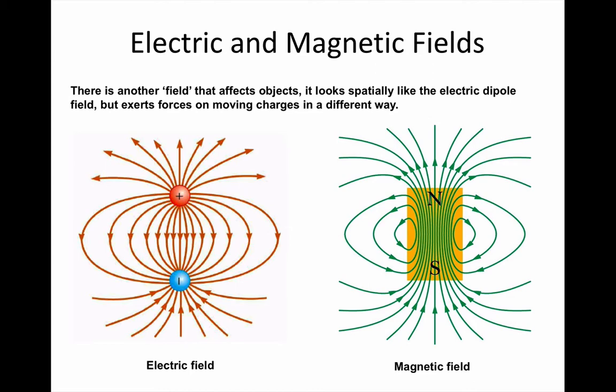Remember that in electrostatics, a dipole means a positive and a negative charge near each other. In magnetism, the equivalent is a north pole and a south pole.